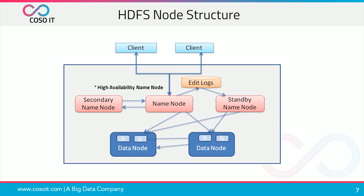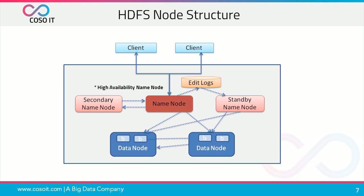Looking at HDFS node structure, suppose a client wants to read a file from HDFS. First, the client will open the file. Then the distributed file system calls the name node using RPC to determine the location of the blocks. For each block, the name node returns the address of all the data nodes that have a copy of that block. The client will then interact with the respective data nodes to read the file.